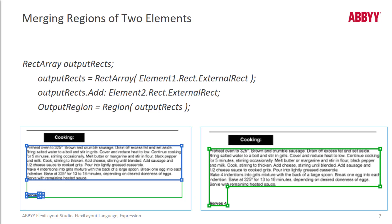There's another way to do this: by building a rectangle array. The code is pretty straightforward here, and of course you could combine more than two rectangles if you want — you just keep building out your array by having more lines that add different rectangles.